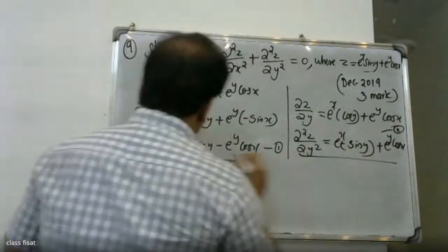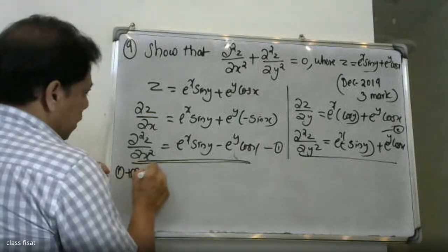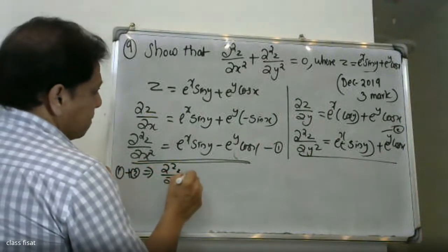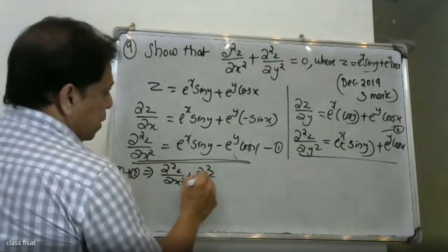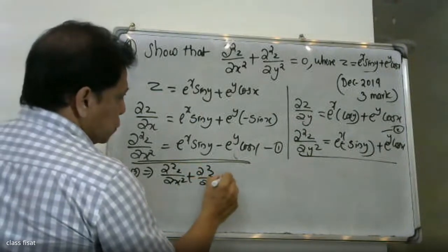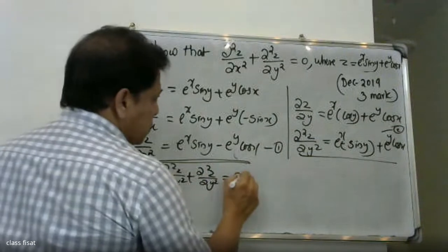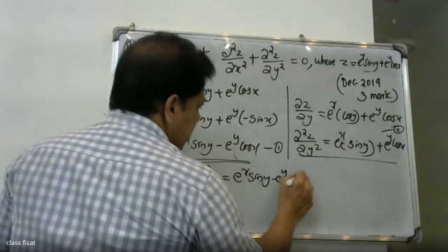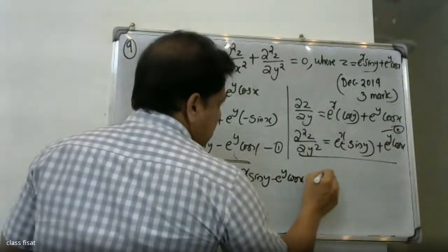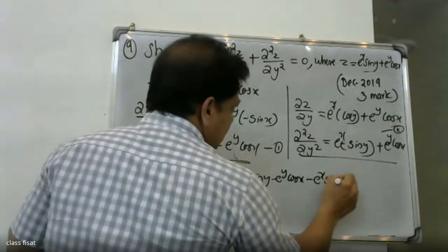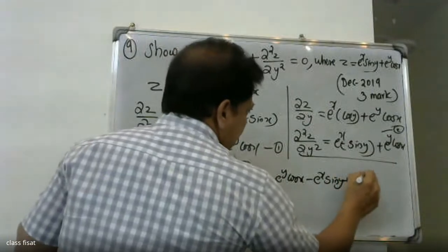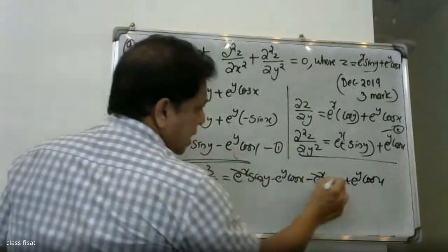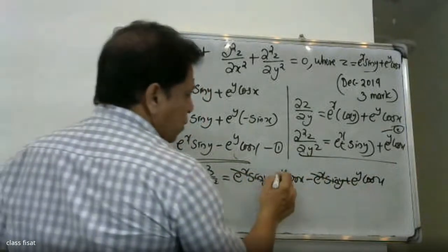Now adding equation one and equation two: dou square z by dou x square plus dou square z by dou y square equals e raised to x sin y minus e raised to y cos x minus e raised to x sin y plus e raised to y cos x. Here e raised to x sin y and e raised to x sin y cancel, and e raised to y cos x terms cancel.